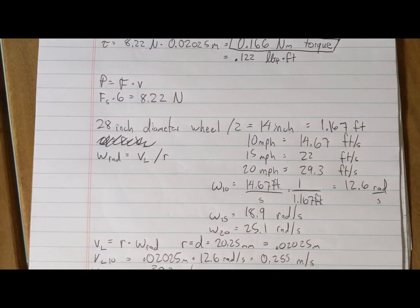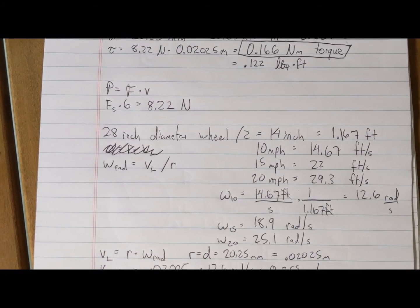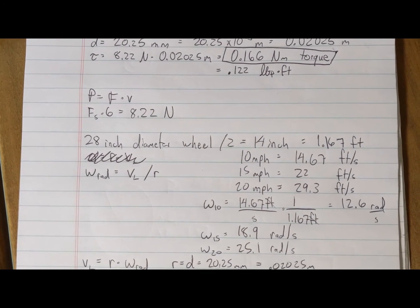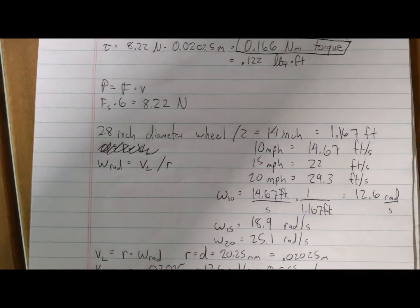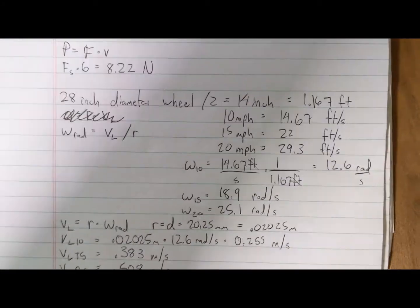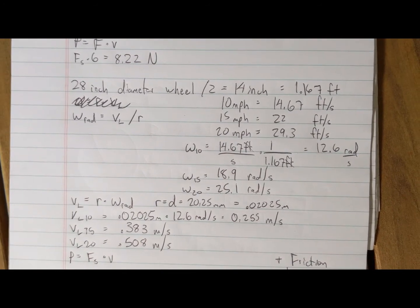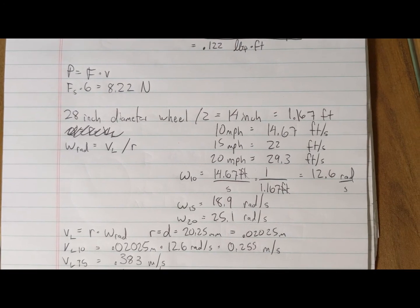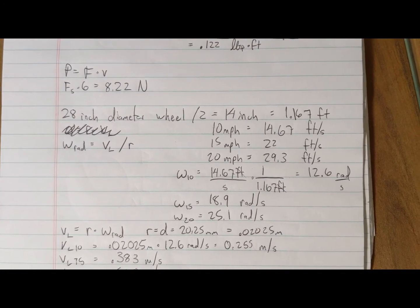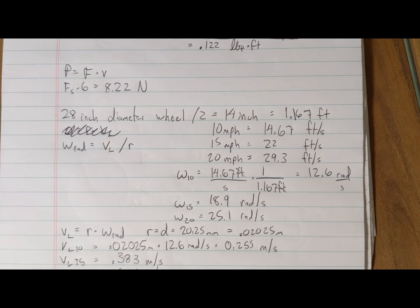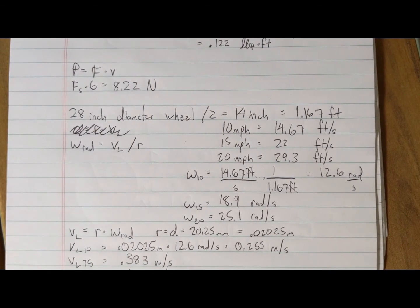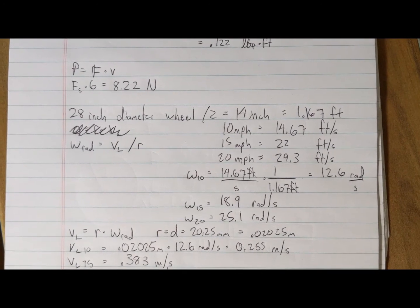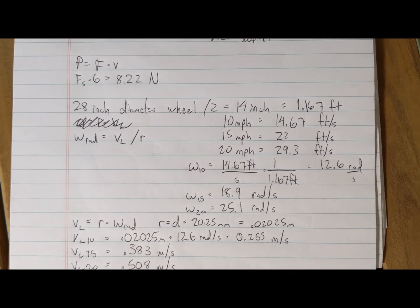Next, let's look at the power. To calculate power, we're going to use the formula power equals force times velocity. From earlier, we have the spring force equal to 8.22 newtons. I measured my wheel at a 28 inch diameter. It's a 27.5 by 2.6 inch wheel. Notice that this actually will change for 26 versus 29 inch wheels. 29 inch wheels are larger and have less rotations per second, so they'll actually experience less drag force from a freewheel hub. That's just an interesting note.